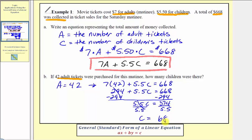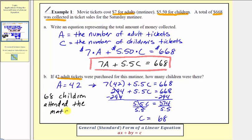Remember, sixty-eight is the number of children's tickets, and therefore sixty-eight children attended the matinee. Let's write this as a sentence. I hope you found this helpful.